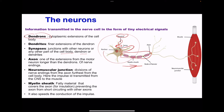The neuromuscular junction is a connective area where the motor neuron connects to the muscle. The myelin sheath is made up of fatty materials that cover axons. Its purpose is to provide insulation to prevent short-circuiting, and it also allows for faster conduction of nerve impulses through the axon.